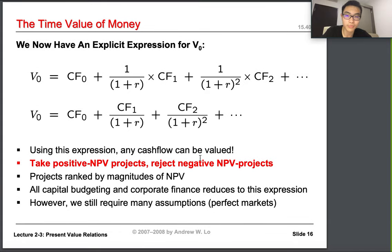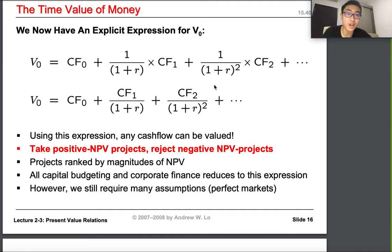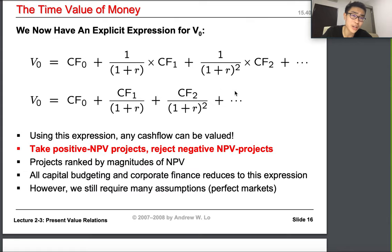However, we're assuming a perfect market and still have to make many assumptions. For instance, R is going to change — it's almost impossible that inflation or currency weakening will remain constant. The exchange rate will not stay the same, as we see even with currencies like yen and UK pounds, which have different exchange rates at different times.